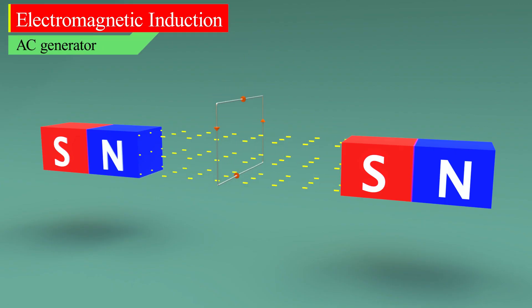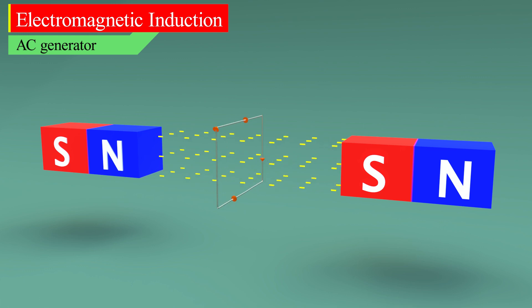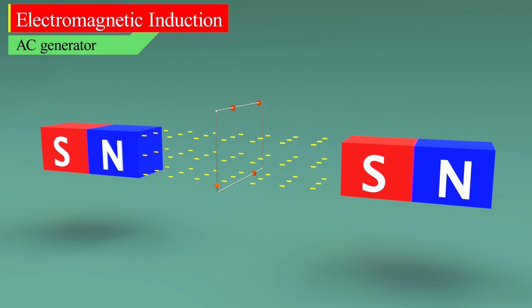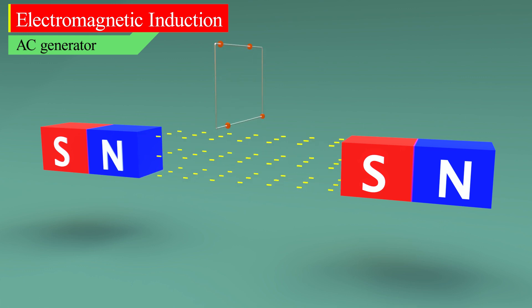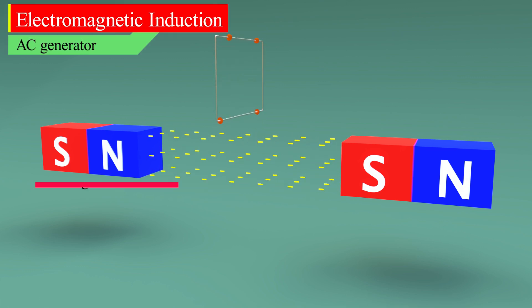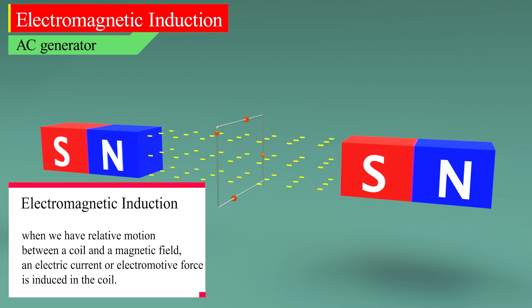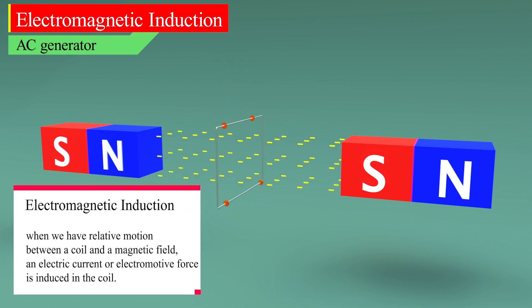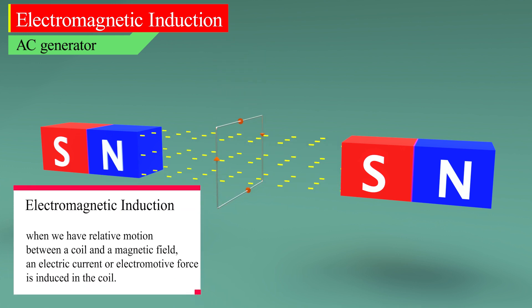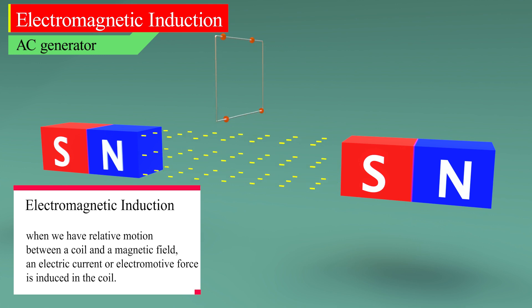AC generator works on the principle of electromagnetic induction. When we have relative motion between a coil and a magnetic field, an electric current or electromotive force is induced in the coil.